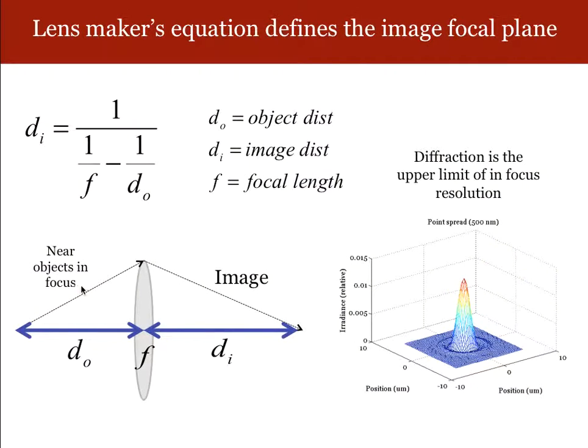When we first discussed focus and image formation, we considered the case of a simple lens, and I really emphasized the lens maker's equation. The lens maker's equation defines where the image focal plane is for an object at some particular distance.